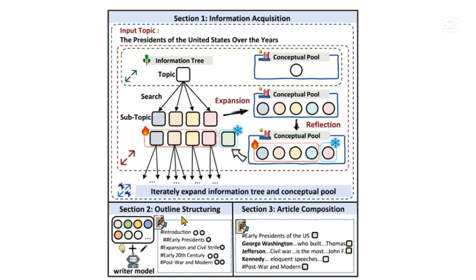The second section is outlining structure. OmniThink maintains a concept pool closely related to the topic, which represents the boundaries and depth of the LLM's understanding. While generating the content outline, it first creates an outline and then asks the LLM to refine and link content from pool P, ultimately forming the final output O.